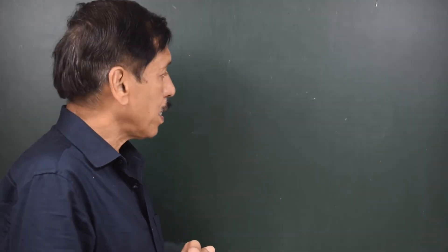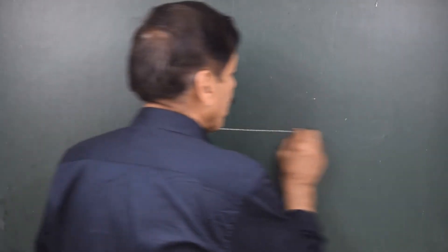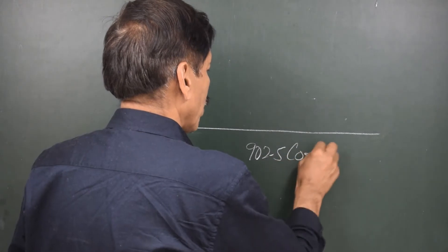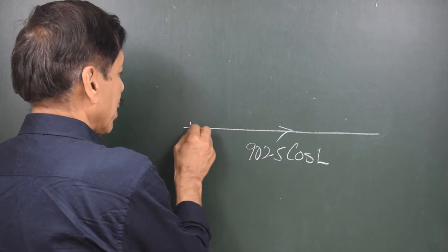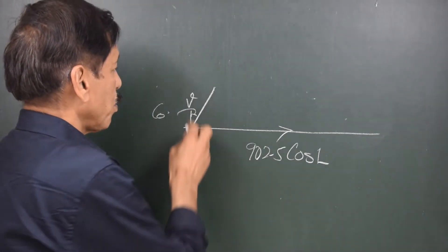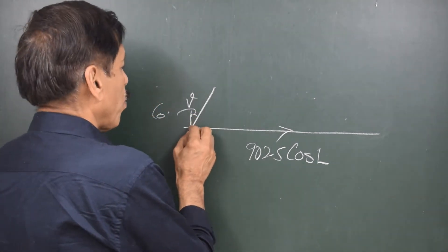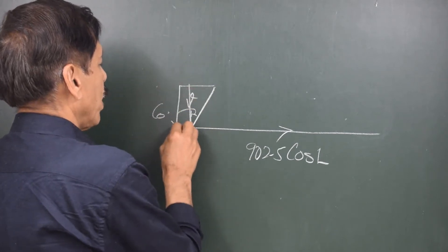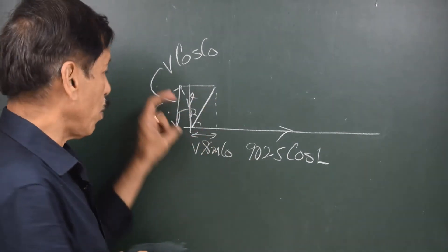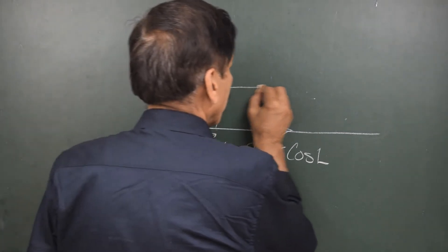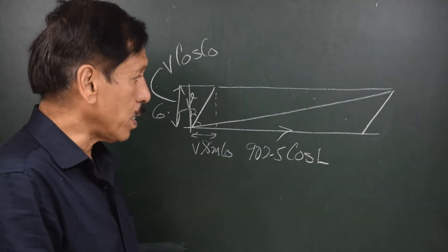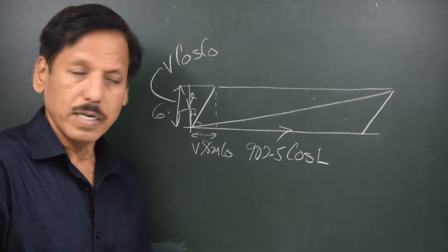Now, how does it happen? If I represent the earth's rotational speed at a particular latitude as 902.5 cos(L), and the ship is making a certain course at speed V, then the speed component in the north-south direction is V cos(course). To find the resultant, we construct a parallelogram, and the diagonal represents the effective combined component.